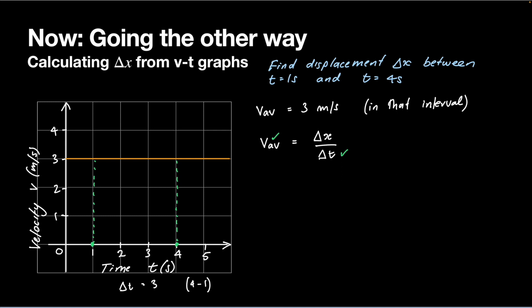If I rearrange this equation by multiplying both sides by delta t, then I get delta x equals the average velocity times delta t. That equals three times three, so my displacement equals nine meters. We can find the displacement when we have a flat velocity graph.